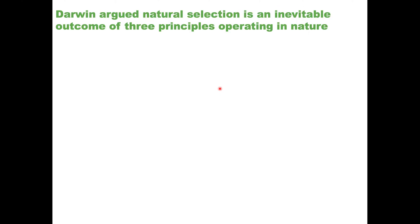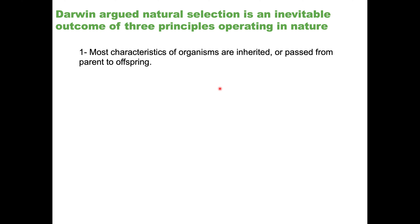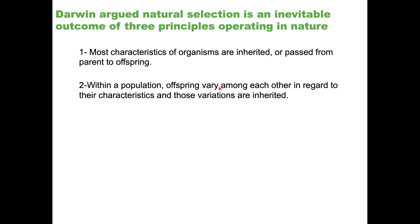Darwin argued that natural selection is an inevitable outcome of three principles operating in nature. First, most characteristics of organisms are inherited or passed from parent to offspring. Second, within a population — and this population concept is really important — when we talk about natural selection and evolution, we're always talking about organisms in the context of a population. A population is a group of organisms of the same species which can mate with one another and produce fertile offspring.